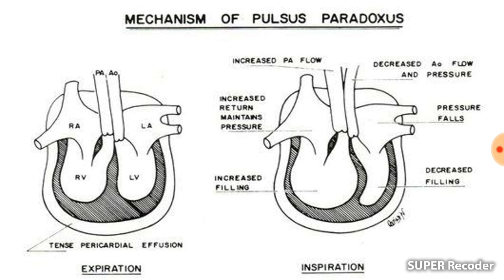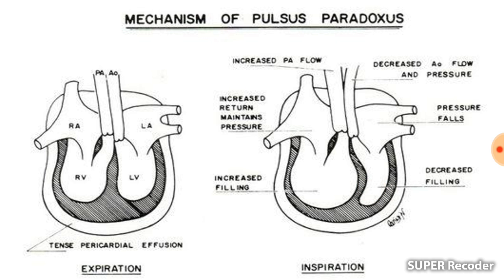In cardiac tamponade, the pericardial space is filled with pericardial effusion fluid or blood. Because of the fluid in the pericardial space, the left ventricle cannot pump blood properly and is not able to generate enough pressure to counteract the bulging of the septum due to the right ventricle. Because of increased blood flow into the right ventricle during inspiration, this pushes the septum toward the left ventricle, causing further reduction of left ventricular volume and further reduction of pulse volume during inspiration. This is the main mechanism of pulsus paradoxus in cardiac tamponade or tense pericardial effusion.